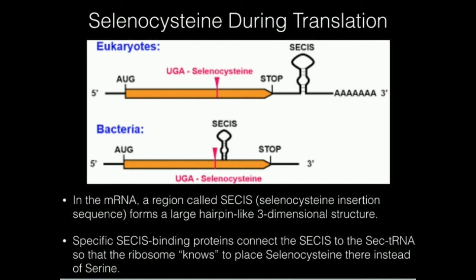If this was not supposed to be a selenocysteine — if it was supposed to be a serine — this tertiary structure would not exist; it would just go flat. So anywhere you need to add a selenocysteine where there's a UGA codon, it has this hairpin structure. That attracts the binding proteins, which direct that tRNA into the particular active site of the ribosome so that selenocysteine can be added. That's how the ribosome knows where to put the selenocysteine, and also knows not to put a serine.